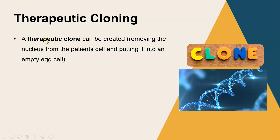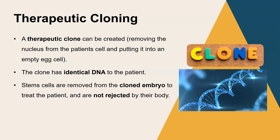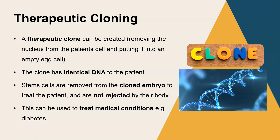The way this is done is we remove the nucleus from the patient and put that nucleus into an empty egg cell, which is the equivalent of fertilisation. So that clone, which is now just our embryo, has identical DNA to the patient. The stem cells are then removed from that cloned embryo and can be treated with particular hormones and chemicals so that the cells differentiate into particular specialised cells. These can then be used to treat whatever the disease is, and the patient's body won't reject those cells because they're a clone of their own. This could be used to treat medical conditions like diabetes.